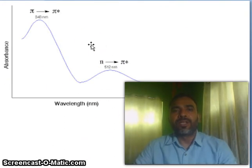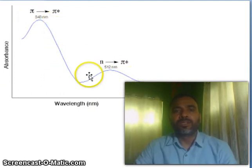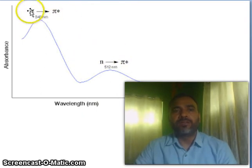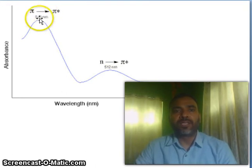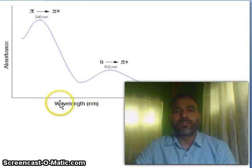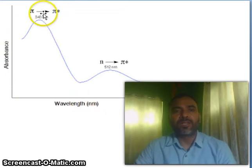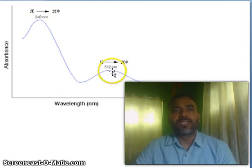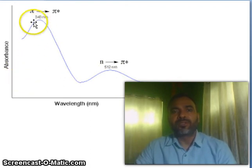In the last lectures I discussed about these two transitions: pi to pi star and n to pi star. Pi to pi star transitions occur at higher energy and lower wavelength. Looking at the wavelength axis and the absorption axis, pi to pi star transitions correspond to higher energy and lower wavelength, while n to pi star transitions correspond to lower energy and higher wavelength.